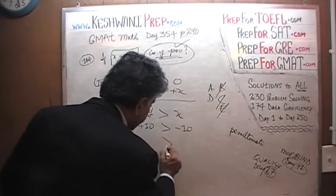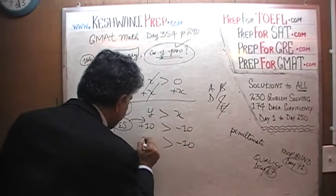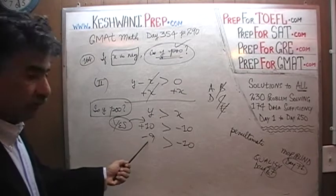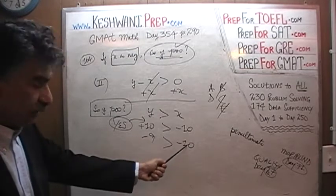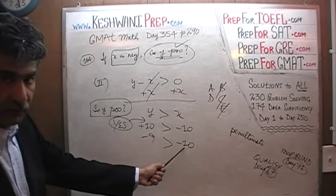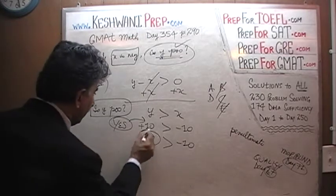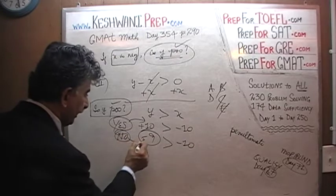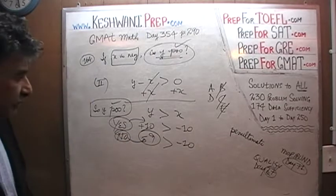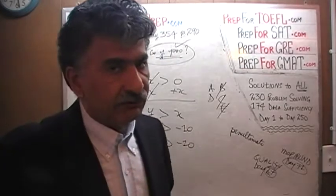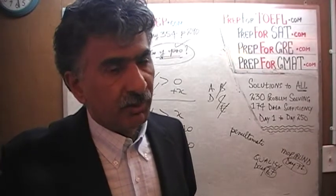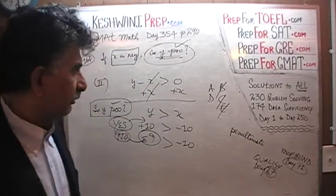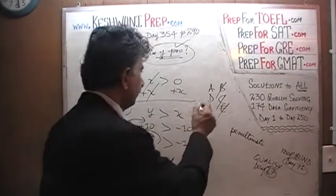But at the same time, it is quite possible that x is negative 10 and y is negative 9 or negative 1. In which case, y is still more than x — negative 9 is still more than negative 10. But is y positive? The answer here is no, it is not positive; it is actually negative. So simply knowing that y is more than x does not enable us to establish whether or not y is positive for sure. It may be or it may not be. Second statement does not do the job, and therefore the answer to this question is A.